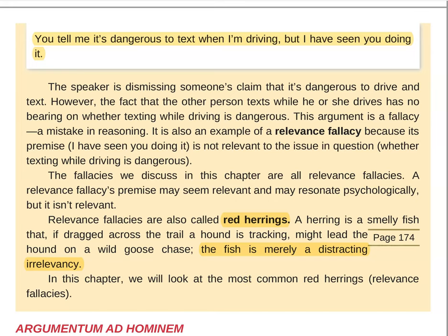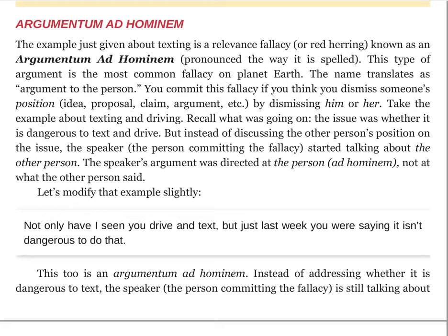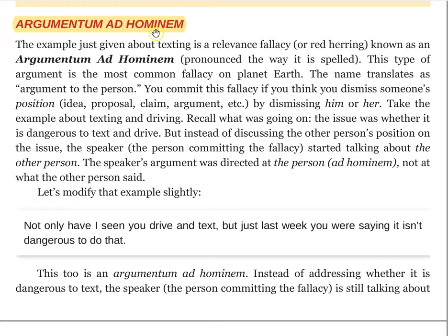So let's get started. There are general categories of fallacies like red herrings and relevance fallacies, and then there are subcategories and even further subcategories. Argument ad hominem is a subcategory. You're going to notice in the textbook that these are highlighted. The subcategories — meaning the types of relevance fallacies that are ad homs — are written in green. So this is argumentum ad hominem. We often call this just an ad hom.